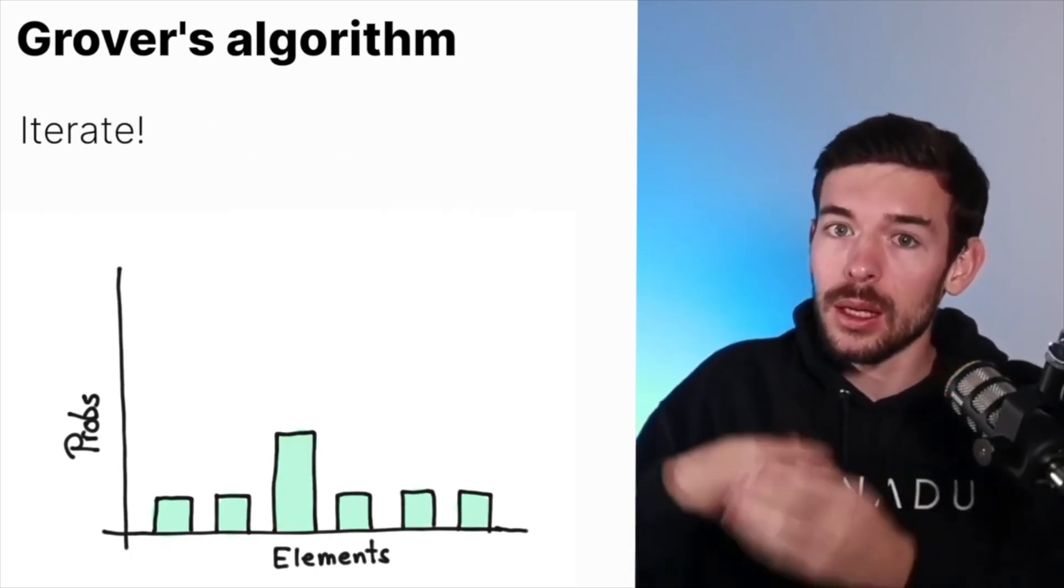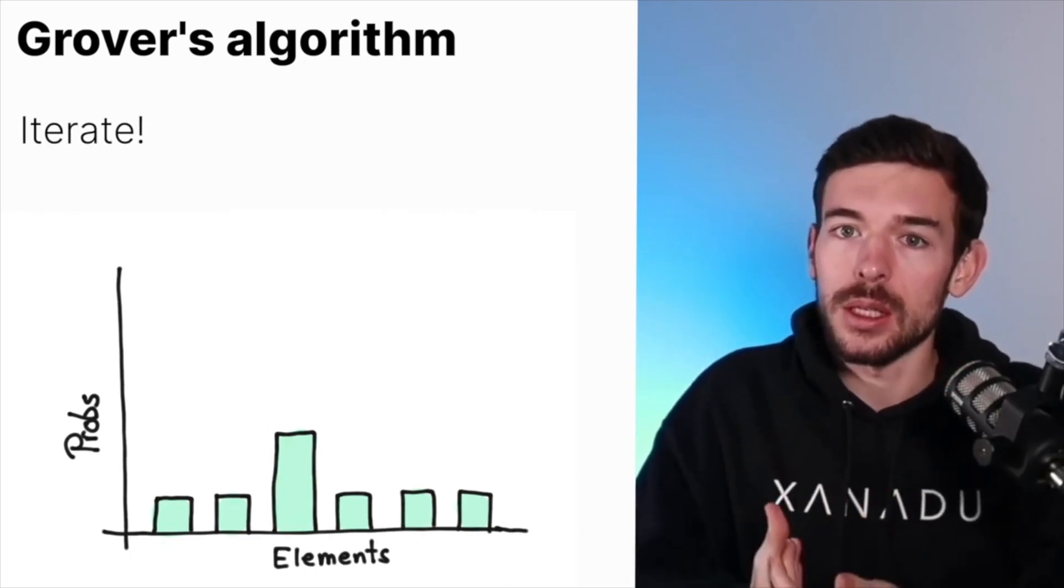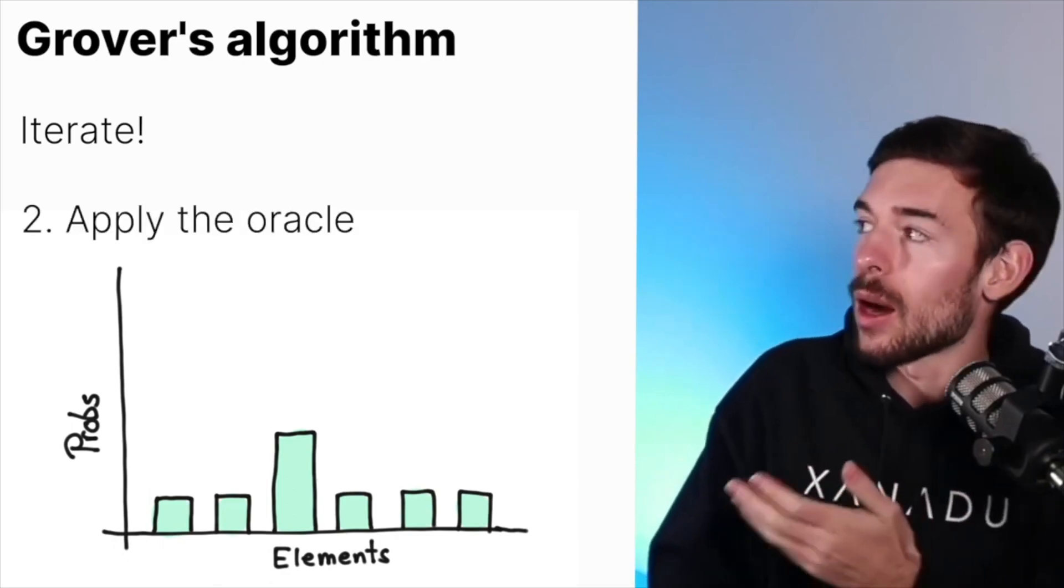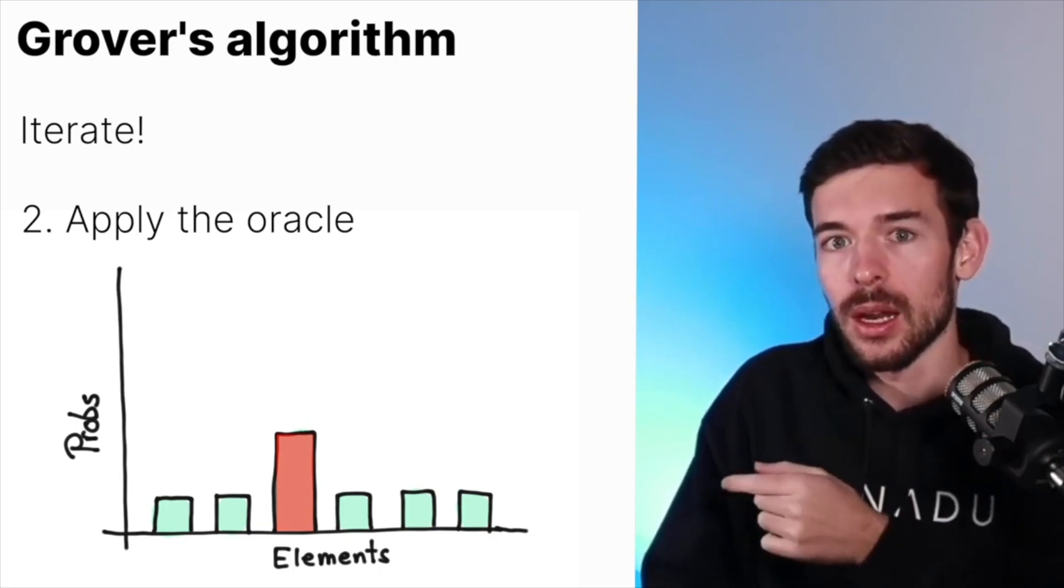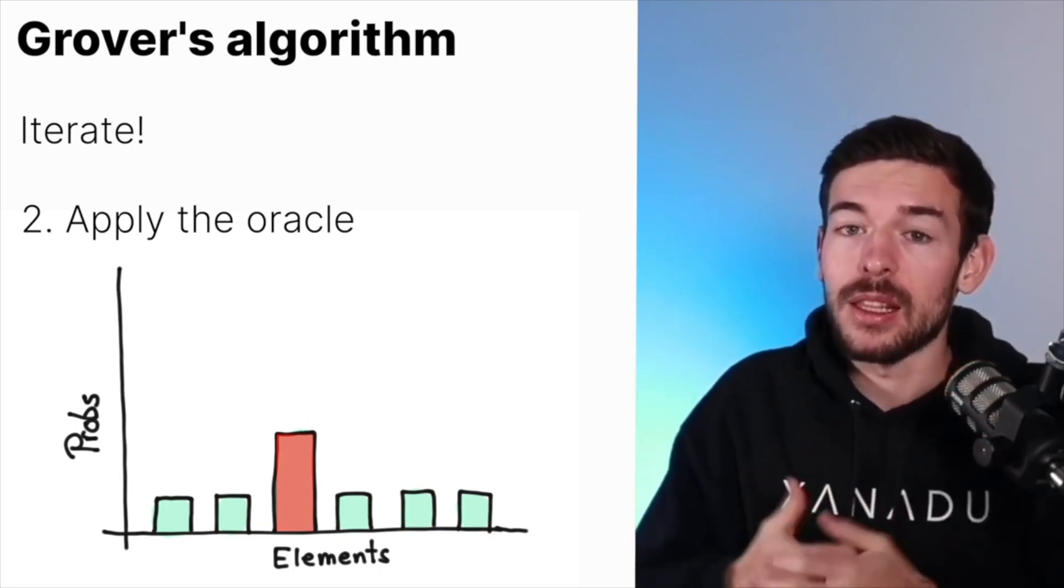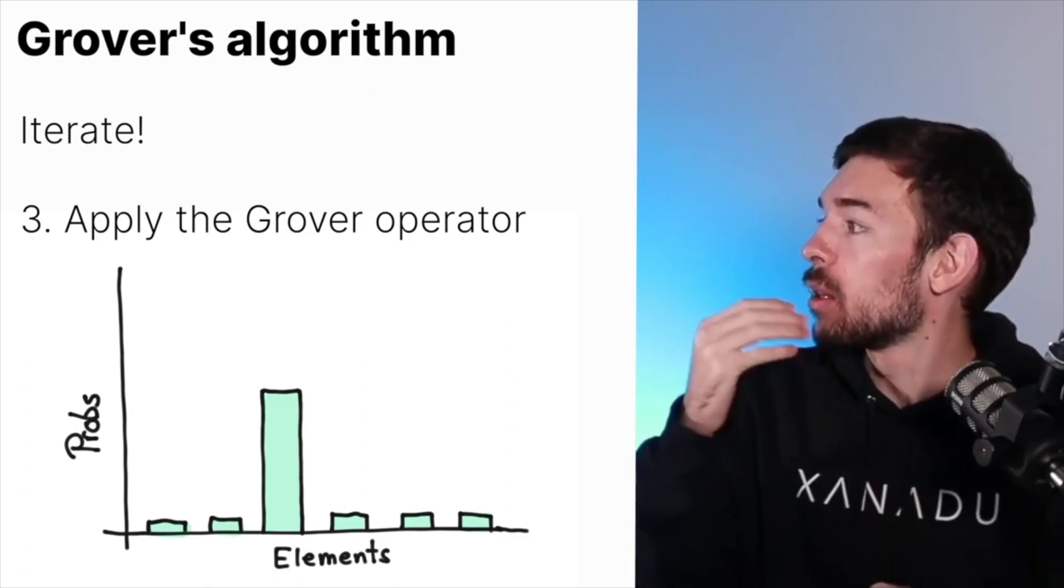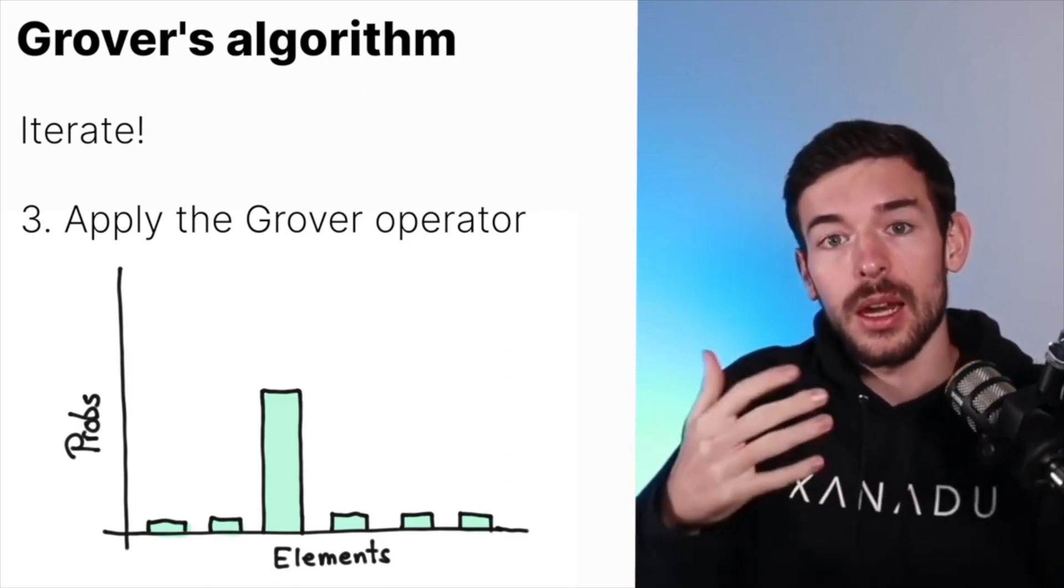But this is something that we can repeat to increase this probability. So now we can apply again the oracle, now the element is going to be red again, and later apply the amplifier. So the chance of this element increases.